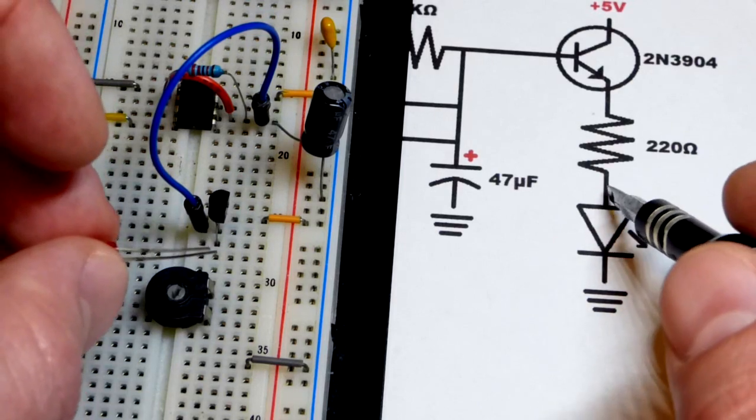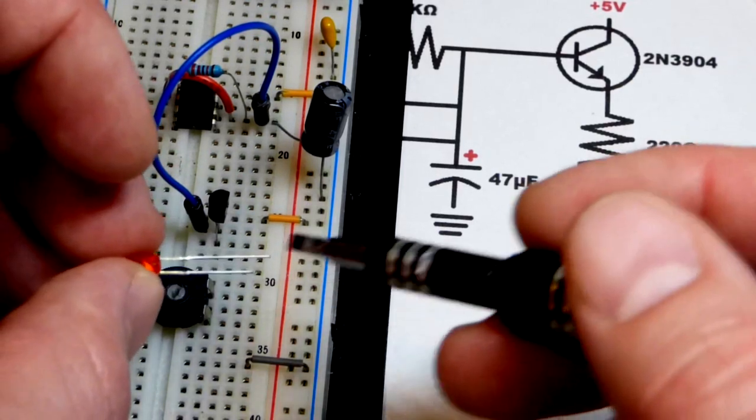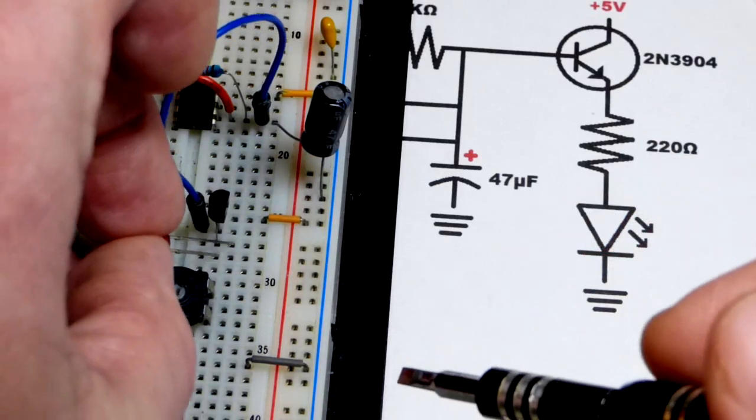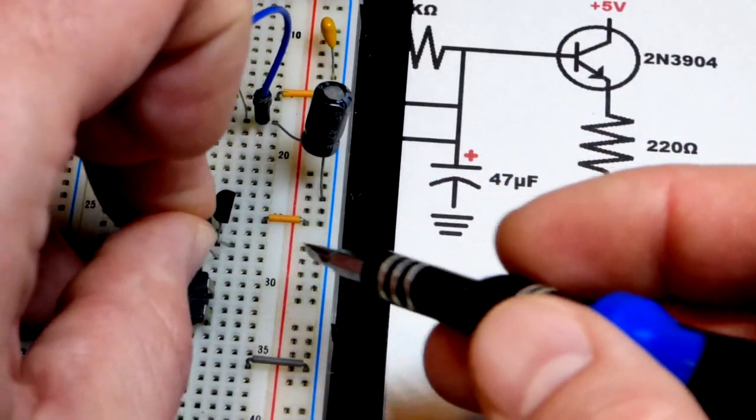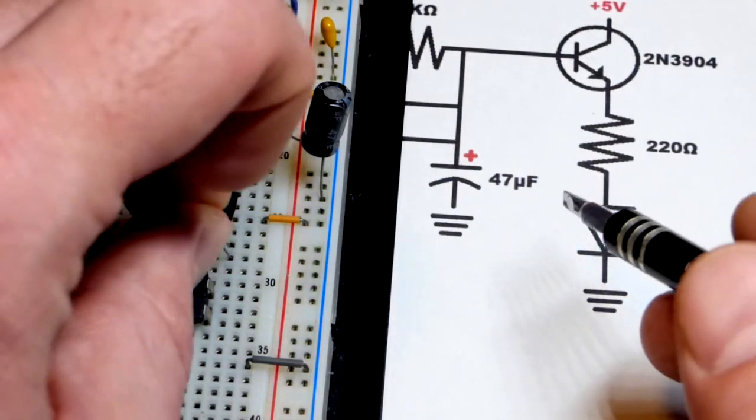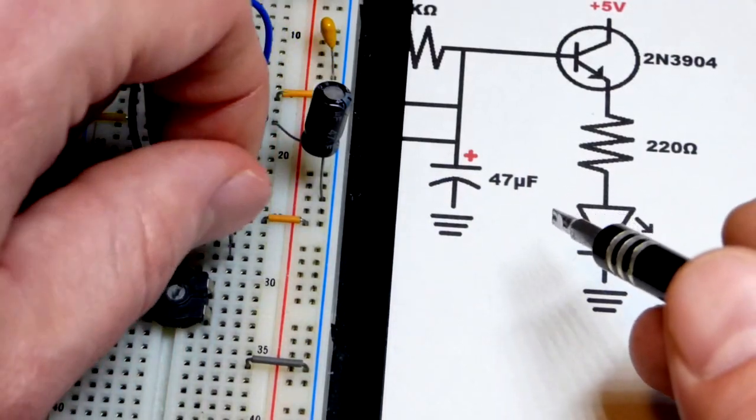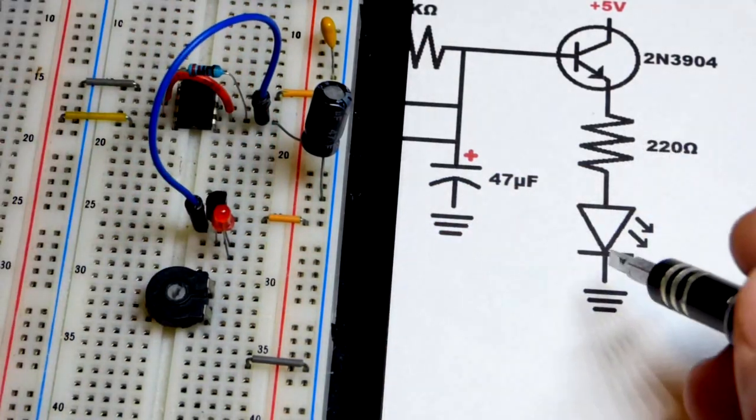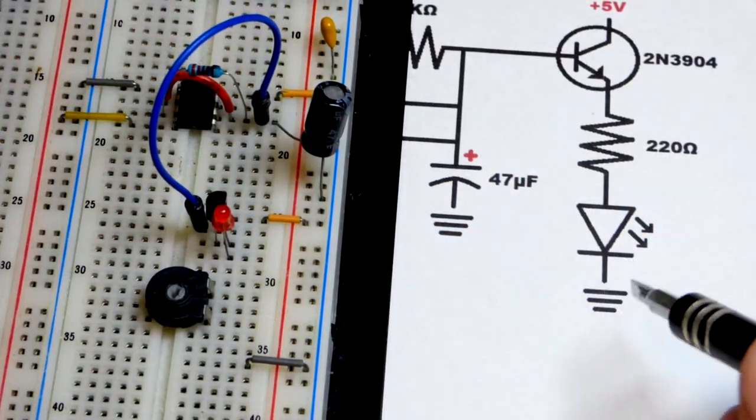As long as the anode of the LED, the long lead, is more positive and the cathode is more negative, it will light up. We're going to put the long lead, the anode, to the emitter of the 2N3904 transistor there shortly. The cathode down here.